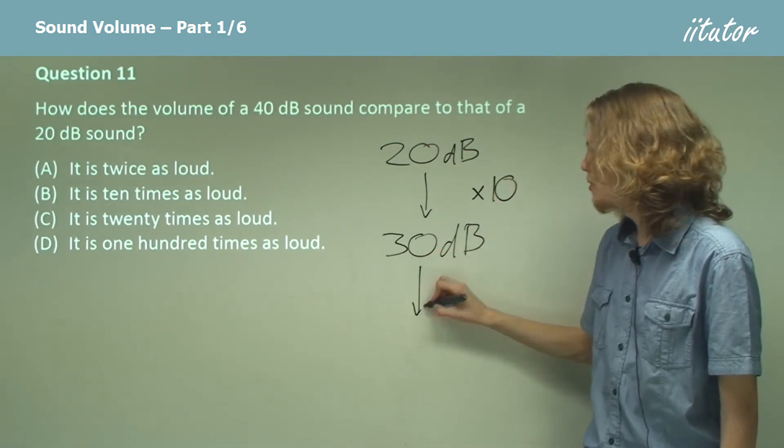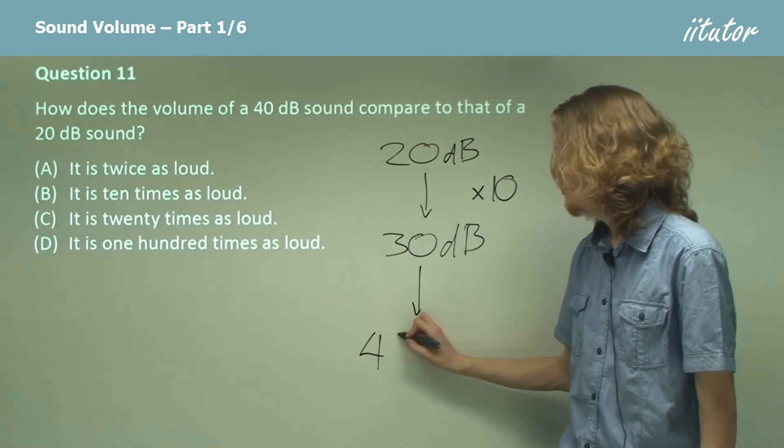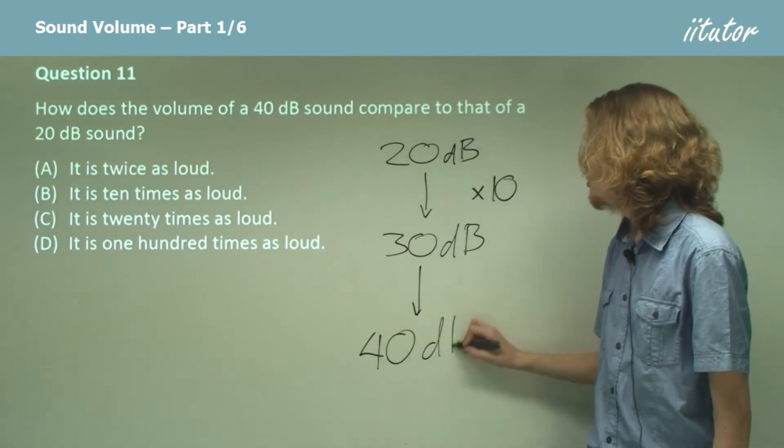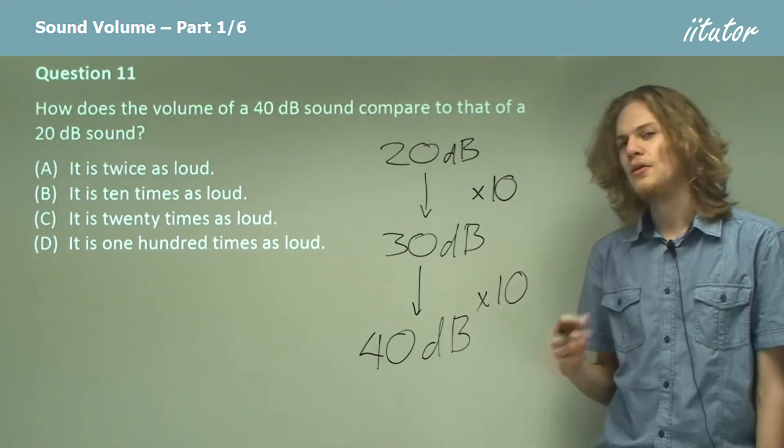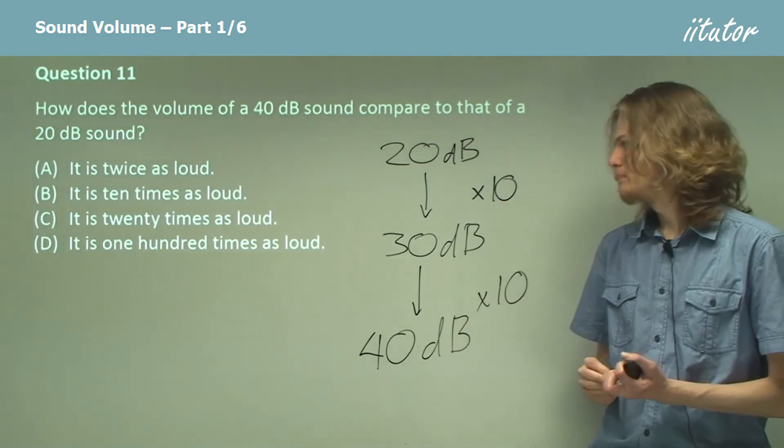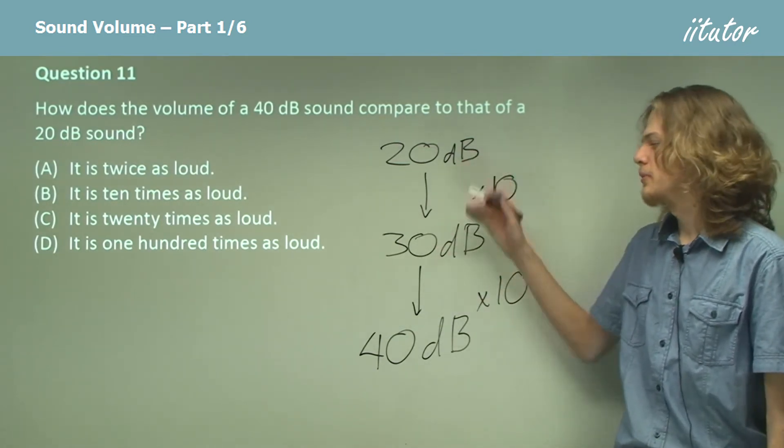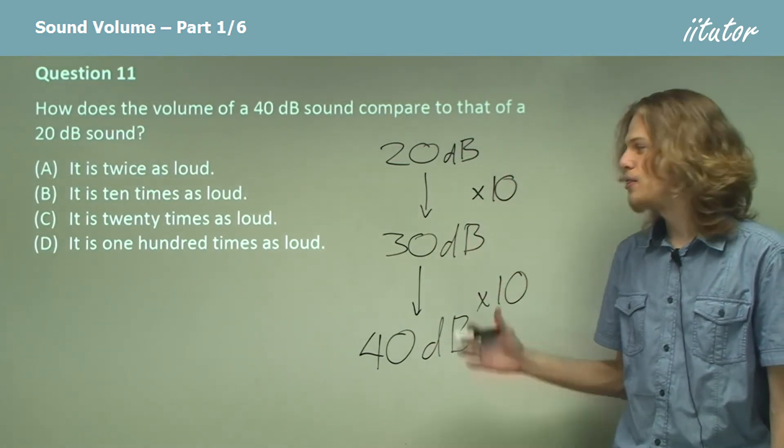And if we go from 30 decibels to 40 decibels, then the 40 decibels sound will be 10 times louder than the 30 decibels sound. So 30 is 10 times louder than 20, and 40 is 10 times louder than 30.